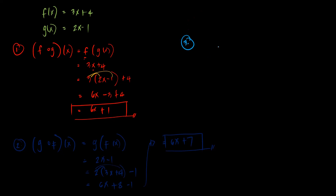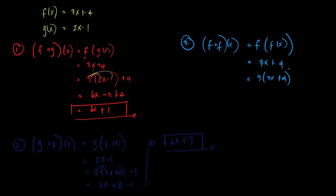Let's have number 3: f composed of f of x. Our f is 3x plus 4. We insert 3x plus 4 in place of x: 3 times the quantity 3x plus 4, plus 4. Do not forget the constant plus 4. Distribute: 3 times 3x gives 9x, 3 times 4 gives 12, then copy plus 4. Simplify: we have 9x plus 16. Since there is no common factor between 9 and 16 other than 1, we cannot factor this out. So f composed of f of x is equal to 9x plus 16.